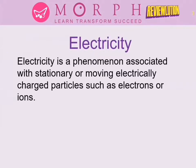Electricity is defined as a phenomenon associated with the stationary or moving electrically charged particles such as electrons or ions. This means electricity is formed because of events related to two types: charged particles that are not moving, or charged particles that are moving, such as electrons or ions. So there are two types of electricity.